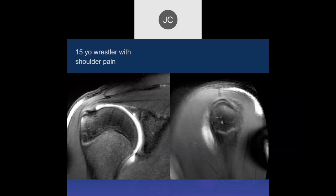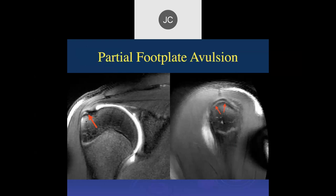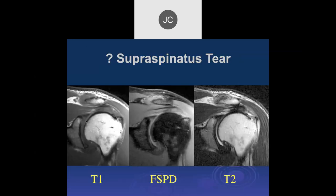15-year-old wrestler with shoulder pain: looking at the supraspinatus, there's a little increased signal and what looks like an avulsion injury with bone edema — a small footplate bone avulsion. What would you do? Just let it heal. Use a sling for a couple of weeks. And if you didn't trust the kid, put him in a swathe so he can't get out of the sling.